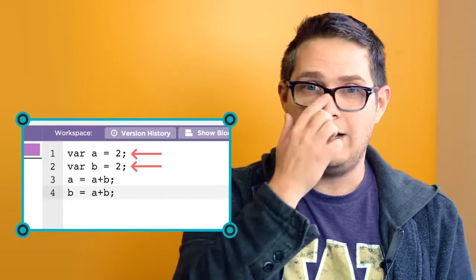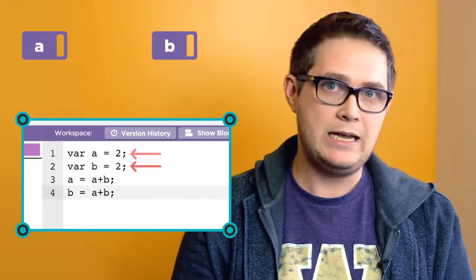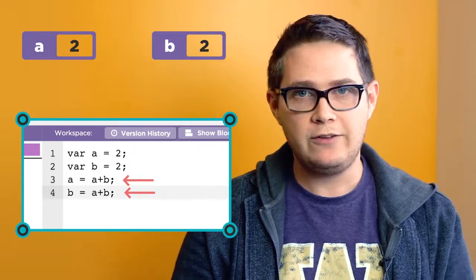In the first two lines, you can see that we have created two new variables, A and B, and assign them both initial values of two. In the next two lines,